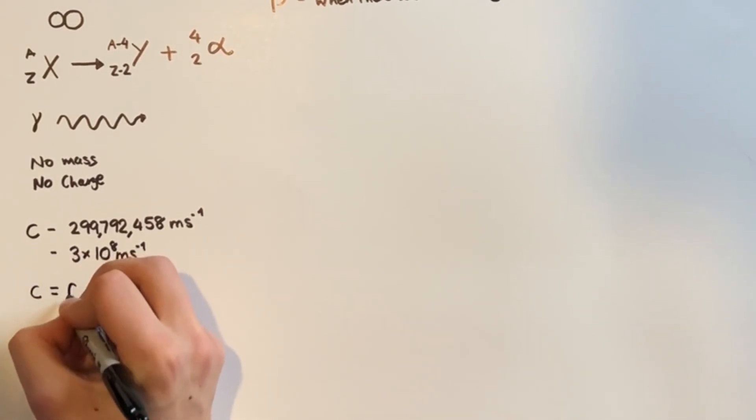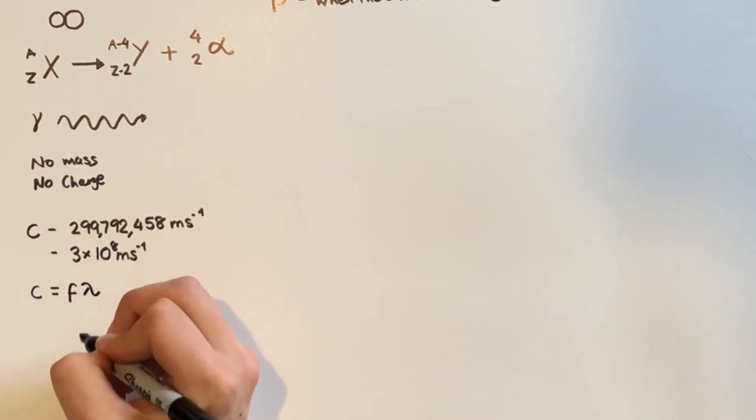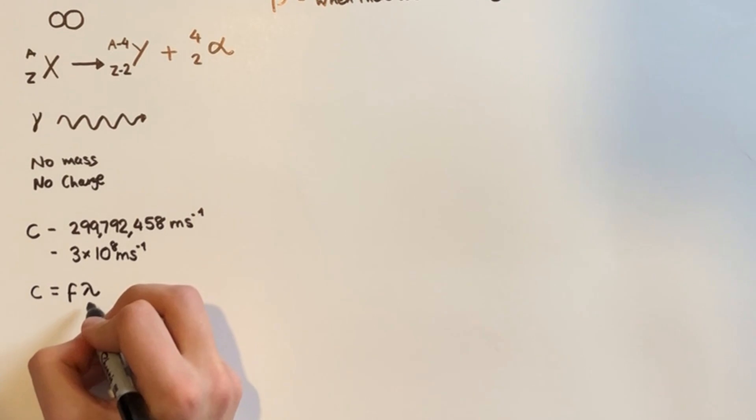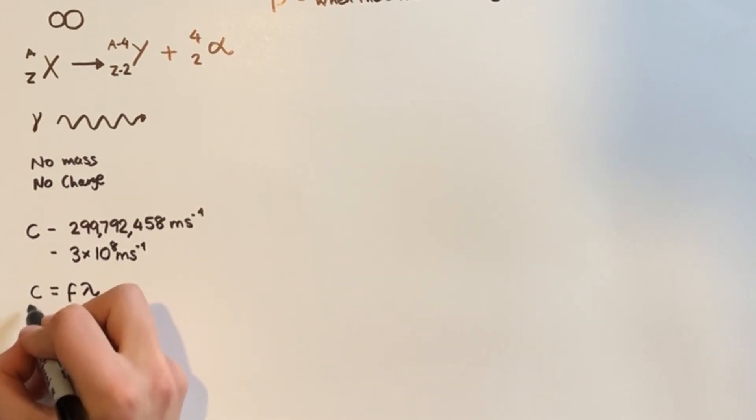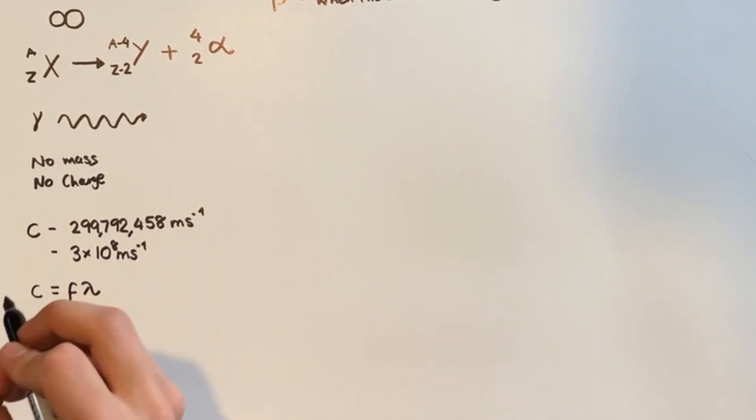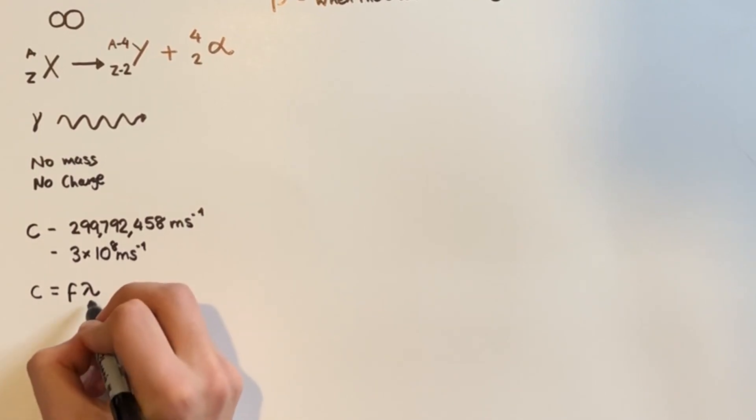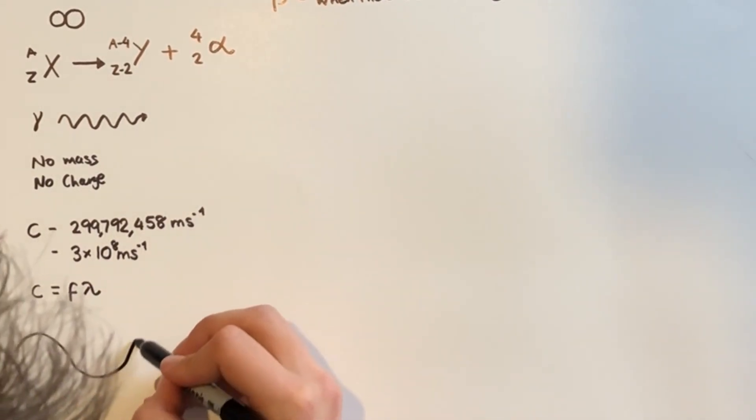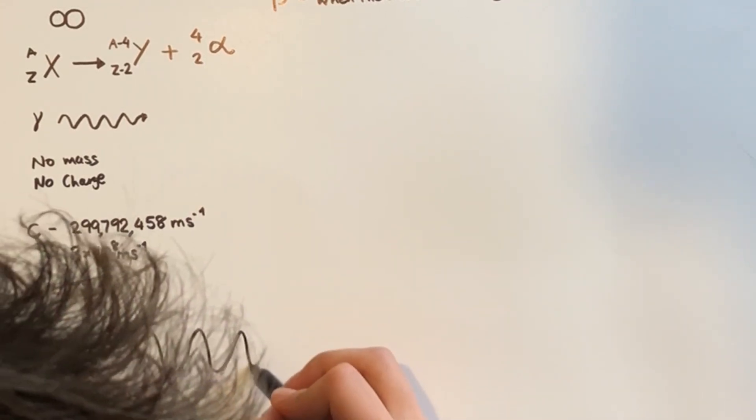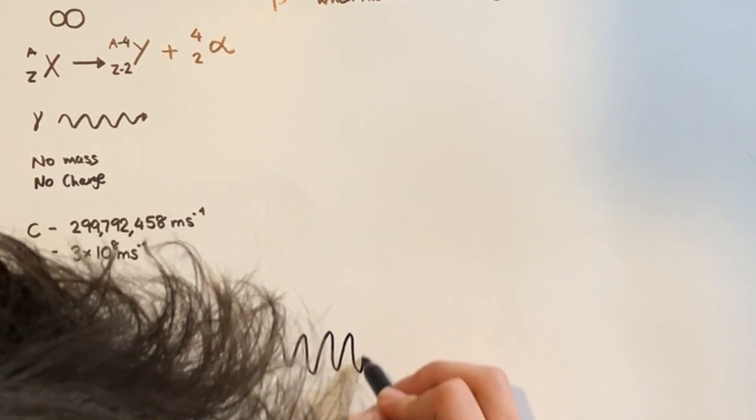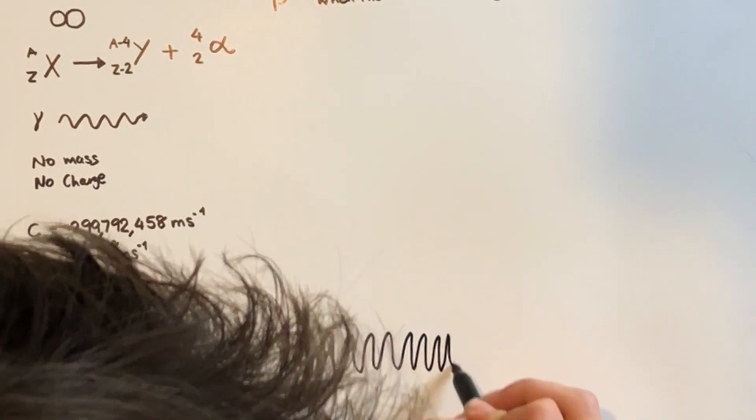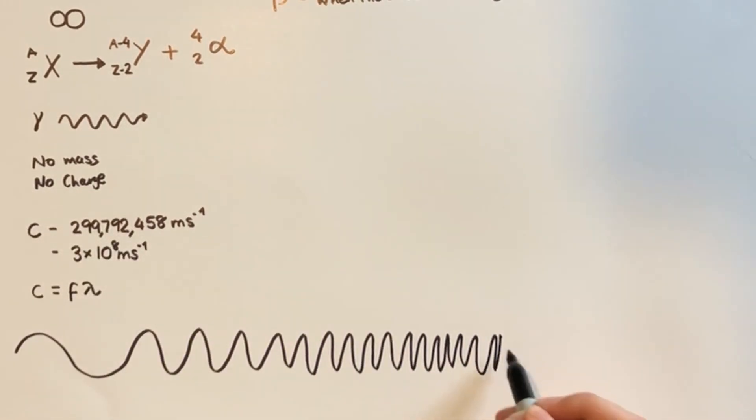Now you'll recall that the wavelength and frequency of a wave are related by the equation that the wave speed is equal to the wave frequency multiplied by the wavelength. So we can see that as the wavelength gets shorter, the frequency of the wave will increase because all electromagnetic waves travel at C. So C is a constant. So as this gets smaller, this gets bigger. So we can actually draw the electromagnetic spectrum in terms of wavelength.